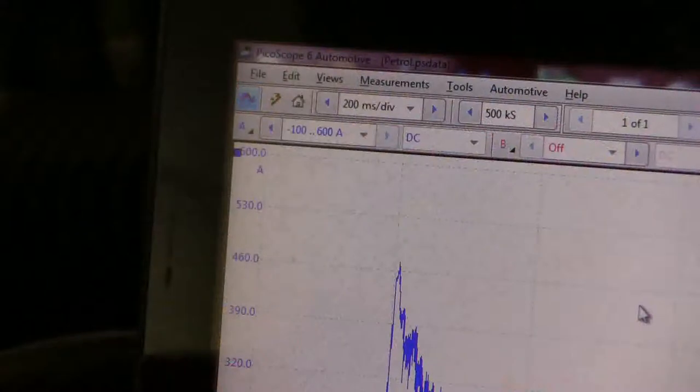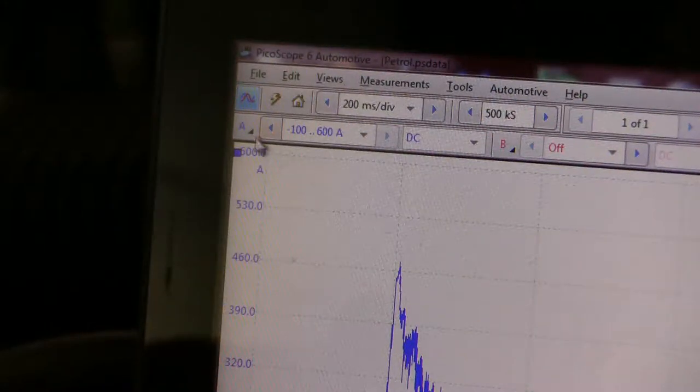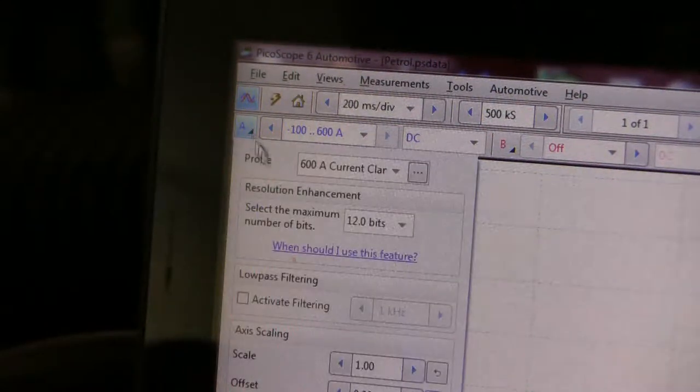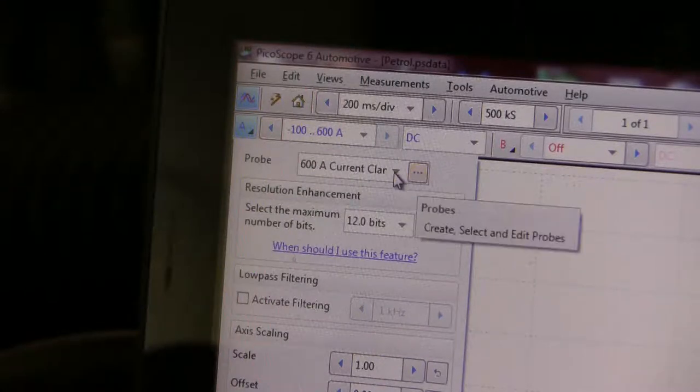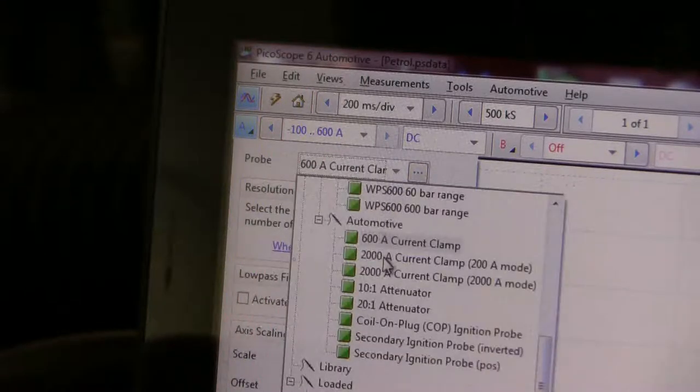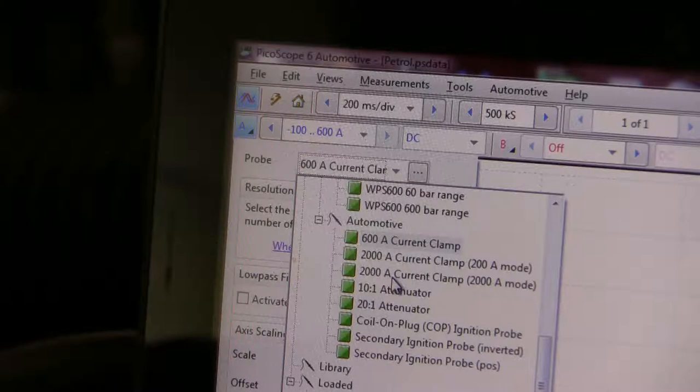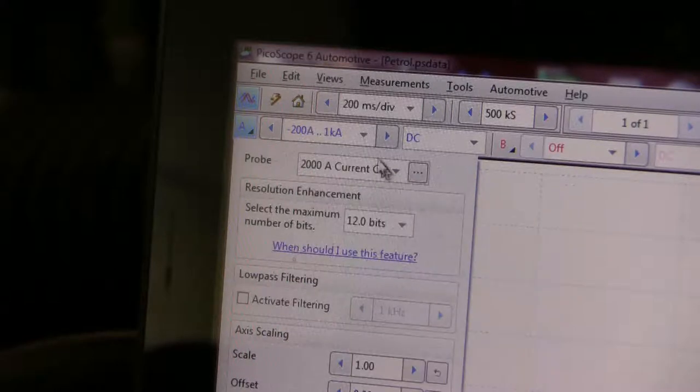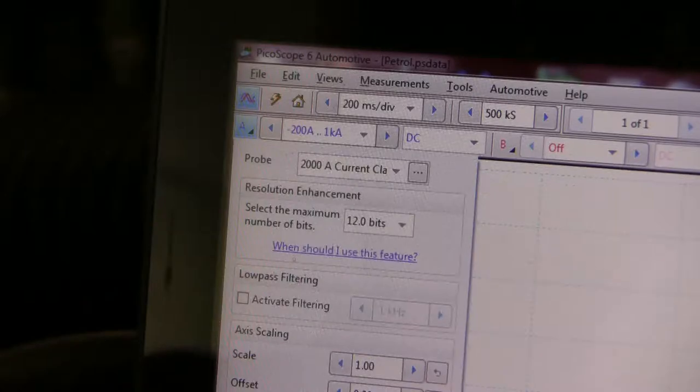We're back at the screen and now we need to tell the software what probe we're using. It's not the 600 amp current clamp, it's the 2000. So we'll go down here and I've got it set at 2000 amp mode there. If we're using a 10 to 1 attenuator, you click that in as well. So now we've told it what we're using for that channel.